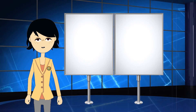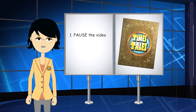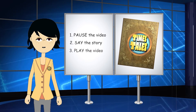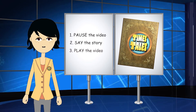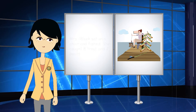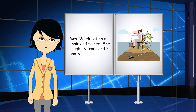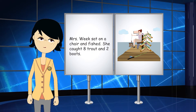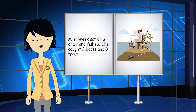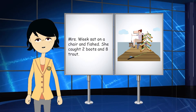Now it's your turn to tell the story. When you hear this sound, pause the video and say the story out loud, then hit play and see if you got it right. It's very important that you say the story in the proper order. Here's the wrong way: 'Mrs. Week sat on a chair and fished. She caught eight trout and two boots.' Here's the correct way: 'Mrs. Week sat on a chair and fished. She got two boots and eight trout.' Now it's your turn to say the stories. Let's begin!